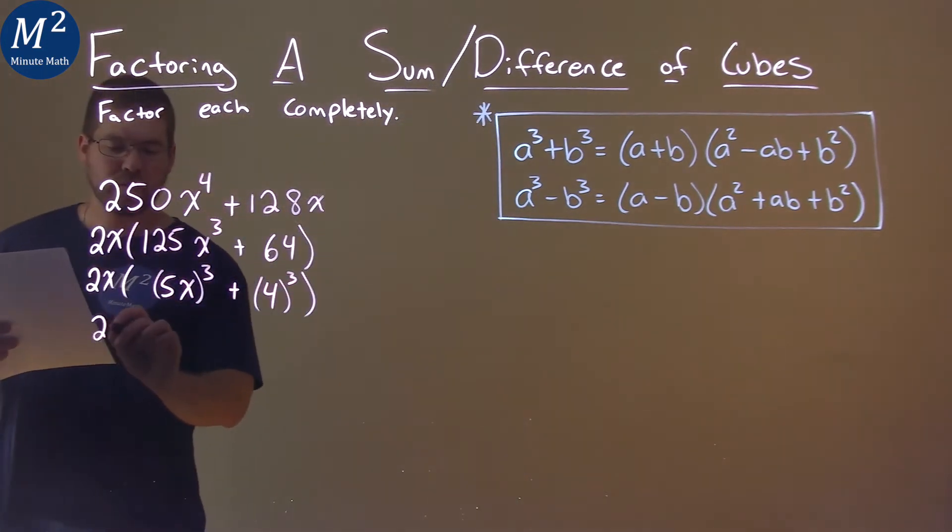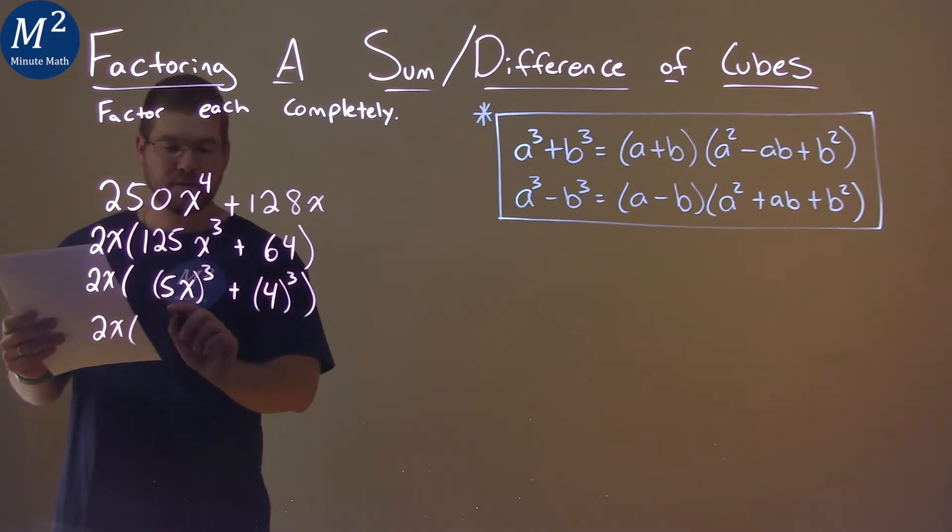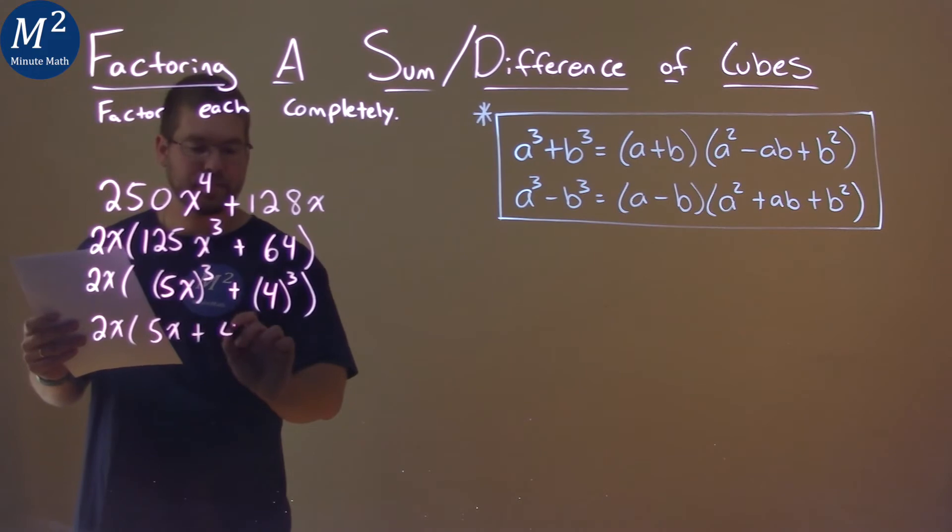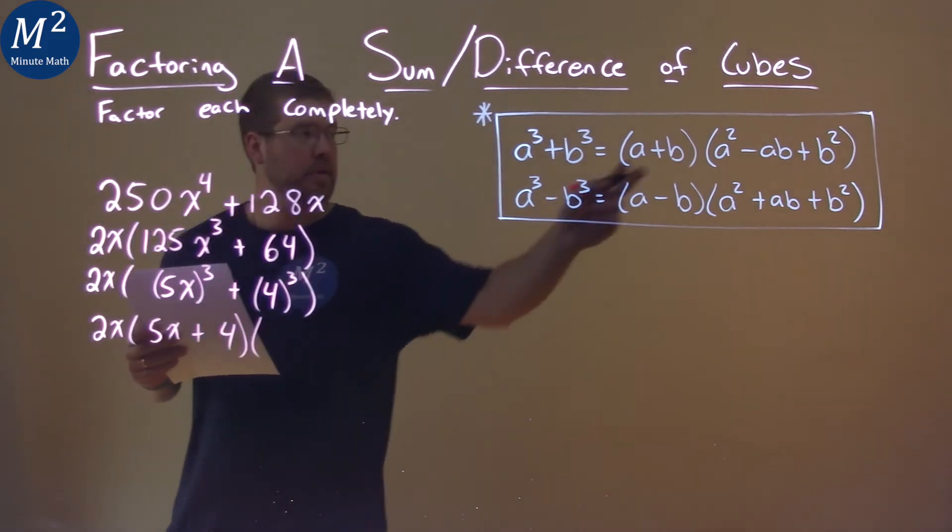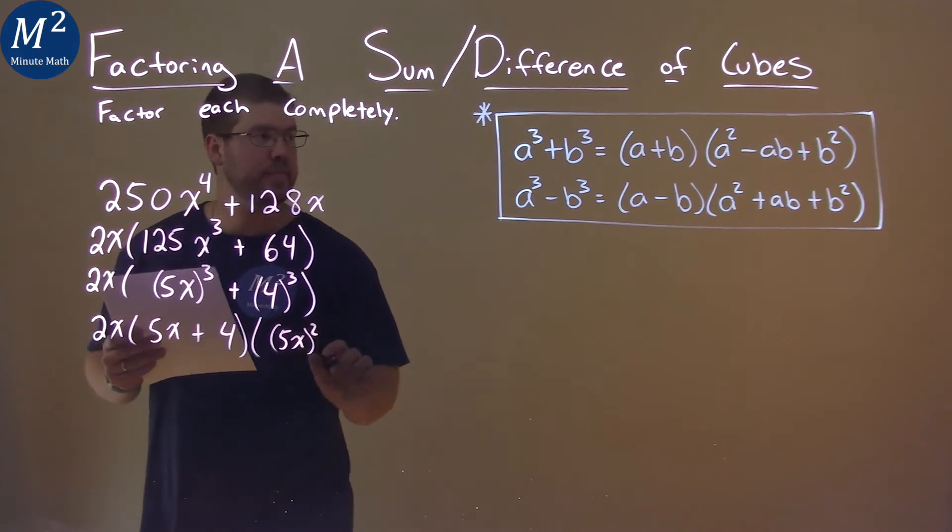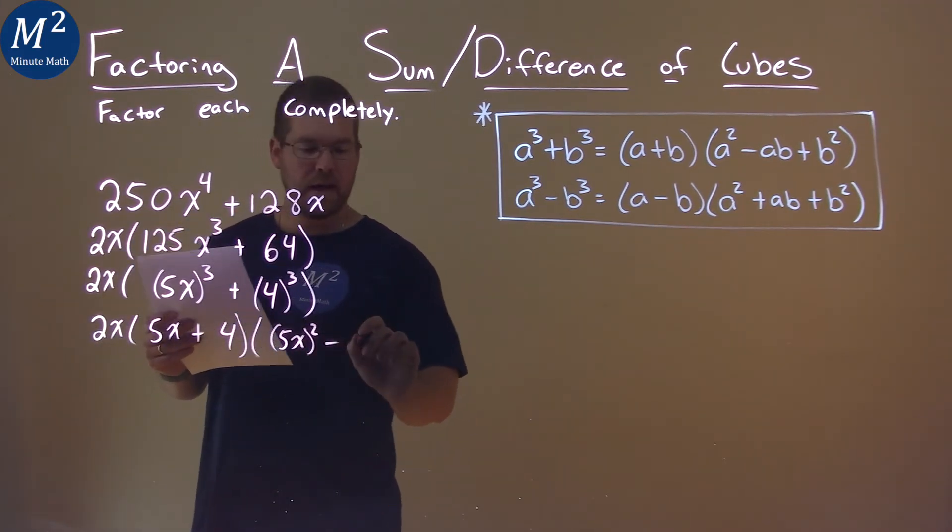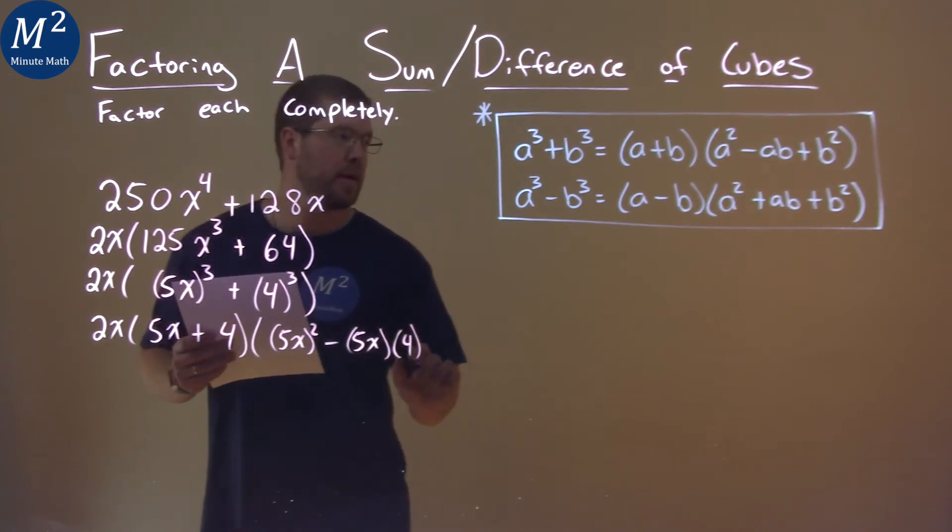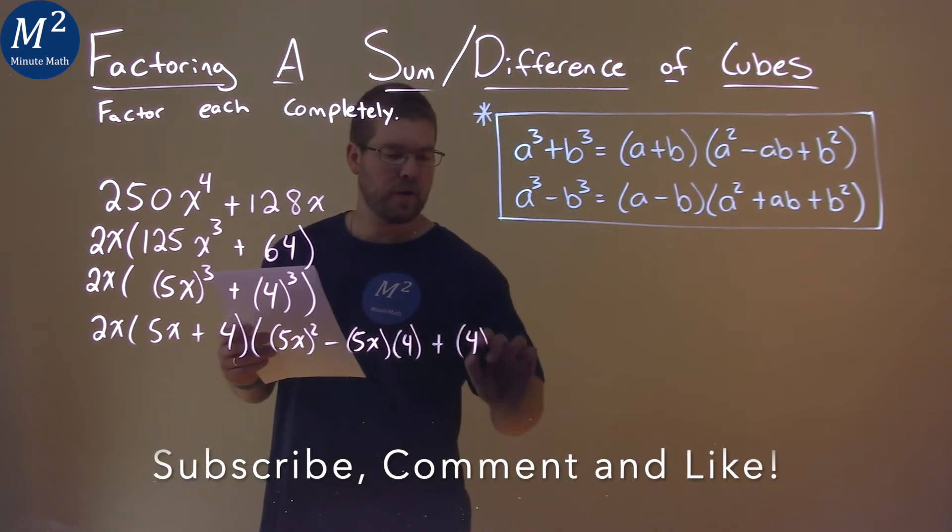Now, don't forget that 2x is still on the outside, but a is 5x plus our b value, which is 4, times 5x all squared, minus a, which is 5x, times b, which is 4, plus our b value, which is 4 squared.